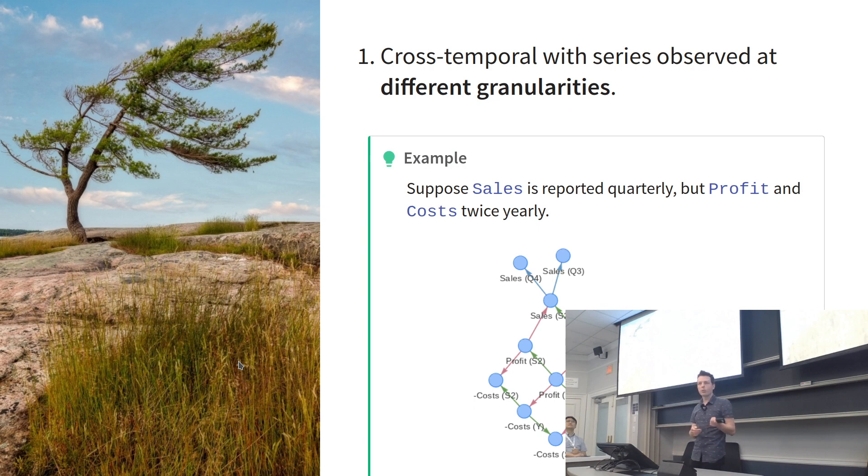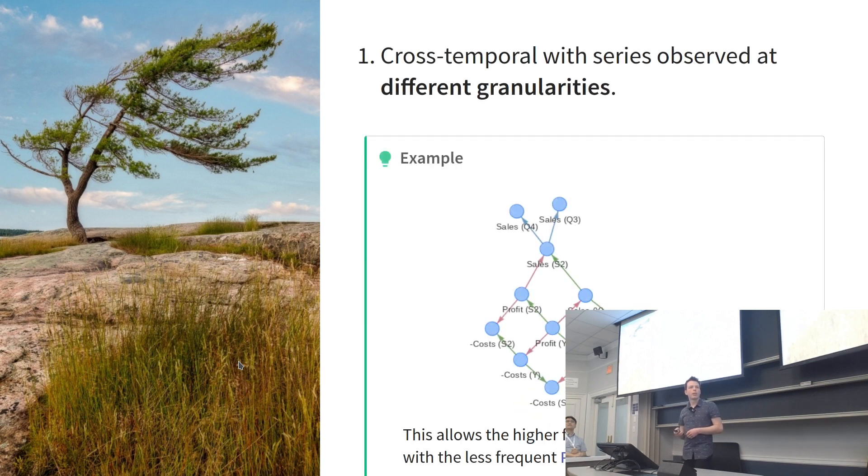Let's consider sales, a very simple example. We get sales figures every quarter, but profit and costs are only reported twice every year. We have different frequencies of observations, but it's still possible to set this up as a directed acyclic graph. The advantage is that we can leverage the higher frequency information from the quarterly sales data, even though we don't have quarterly profit and cost data. We can traverse up this graph or the summation matrix to leverage information from other series to improve our forecasts even at the quarterly level for sales.